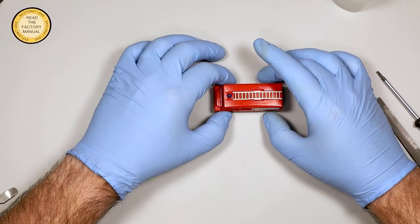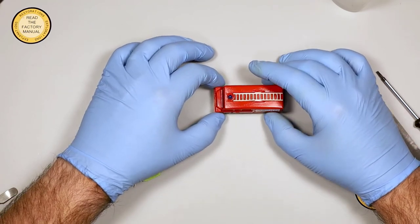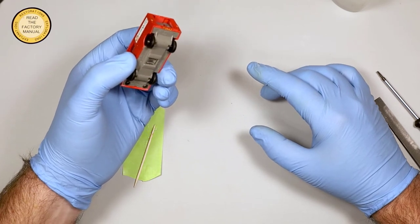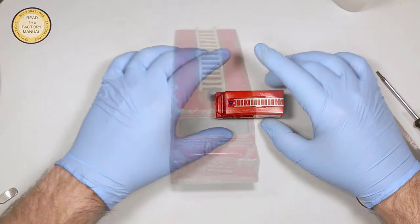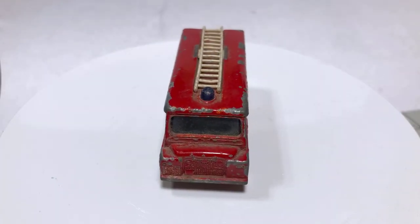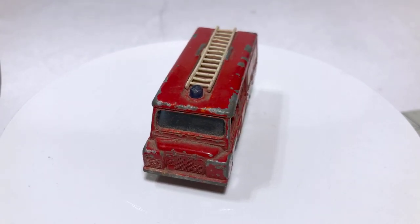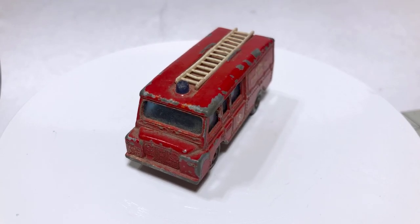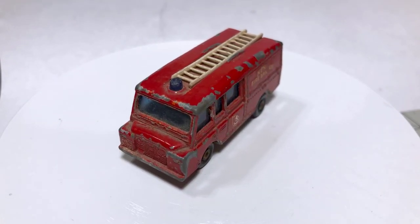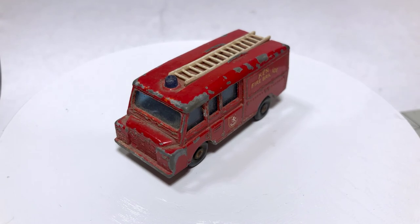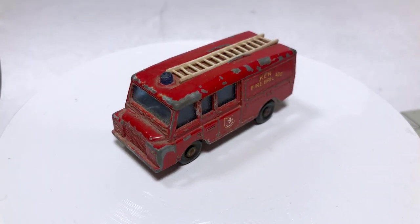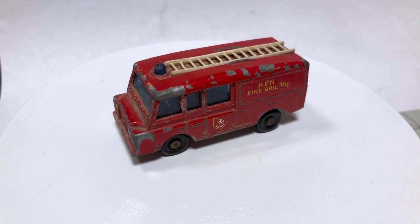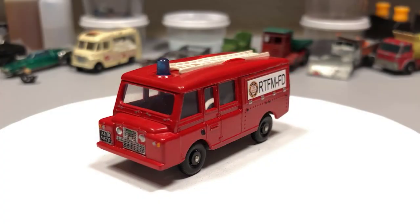The Matchbox number 57 Land Rover Fire whatever thinger is. What do they call it? They call it a fire truck. So we take a look at it before. It was played with quite a bit as you can see. And it's got a bunch of scratches and regular play stuff in there. The windshield unfortunately was cracked so we had to replace that with some packing material.